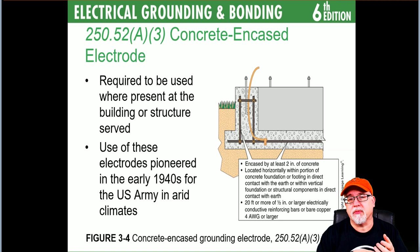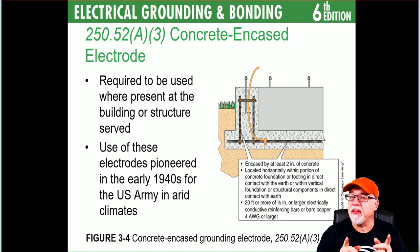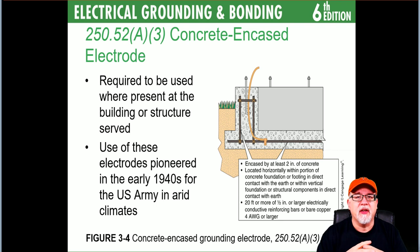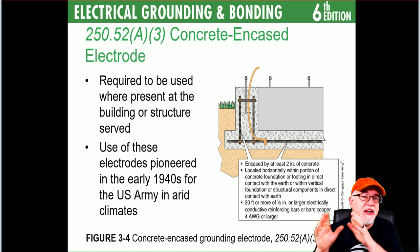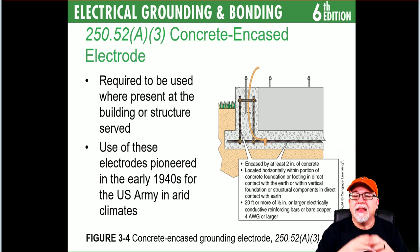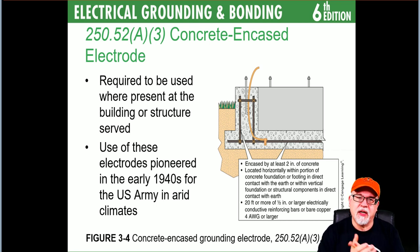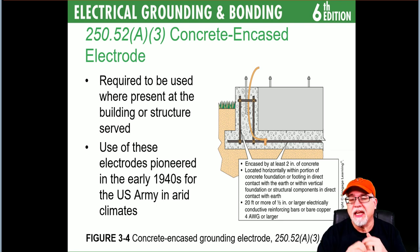250.52(A)(3) — concrete encased electrodes — are required to be used where present. They are typically present in all installations where you have a concrete footer or foundation in direct contact with the earth. If there's a vapor barrier making the foundation not in direct contact with earth, then it is not a concrete encased electrode — it has to be in direct contact.